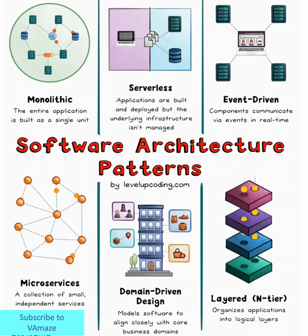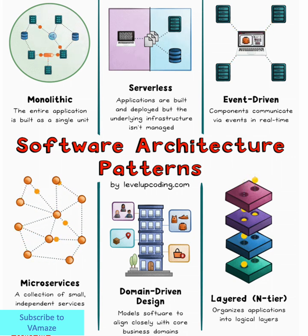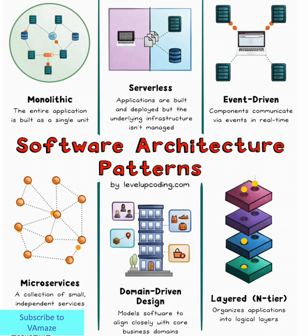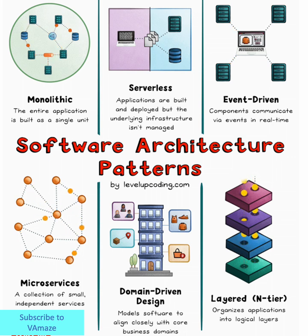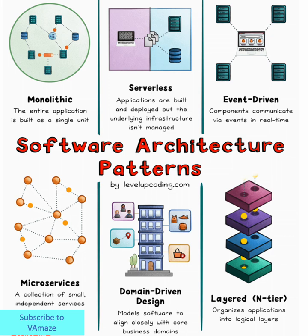Microservices work best when you have the organizational structure and tooling to support them. Next, we have domain-driven design, or DDD. Domain-driven design is unique in our list because it's not an architecture pattern itself, but rather a software design approach that profoundly influences architectural decisions. DDD structures your system to align closely with your business domains. You define bounded contexts — clear boundaries around specific business domains — and model your software to reflect how the business actually works. DDD emphasizes domain modeling, strategic design, and close collaboration between developers and domain experts. When done well, it significantly reduces technical debt and improves maintainability because your code structure mirrors your business structure. Changes in business requirements translate more naturally into code changes.